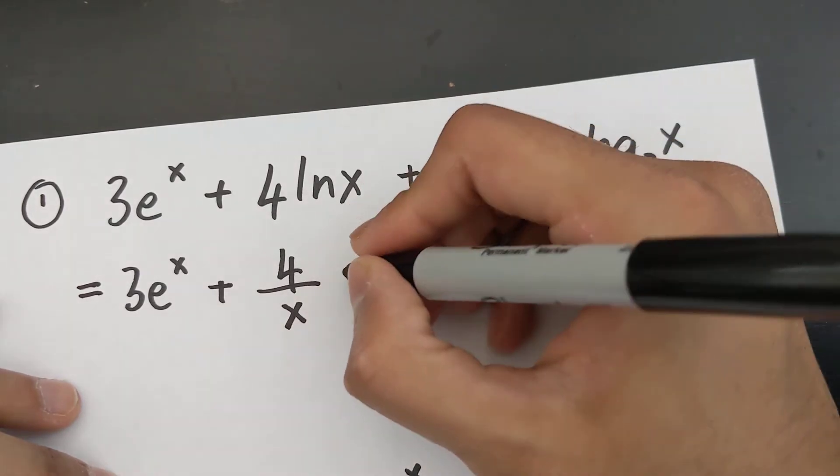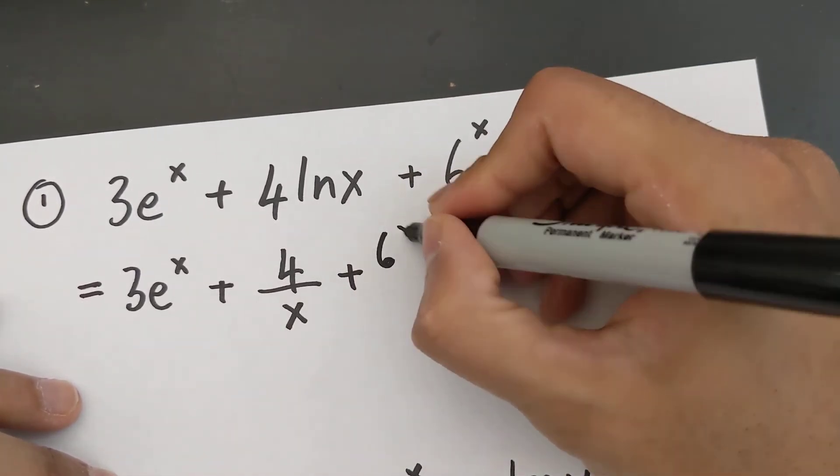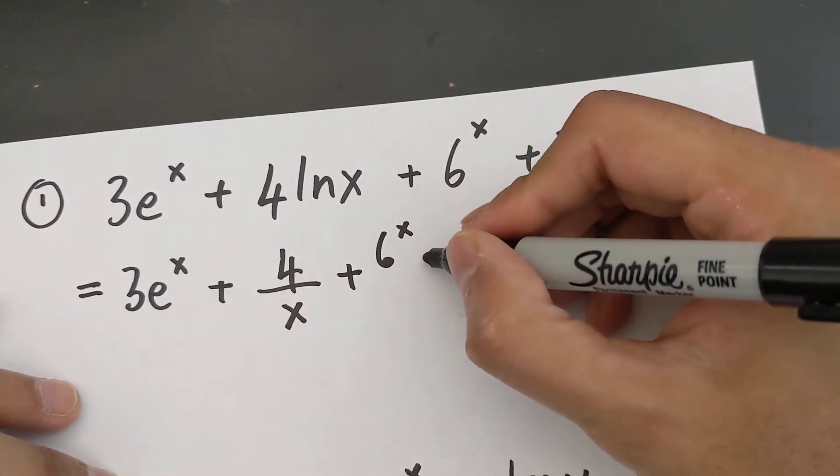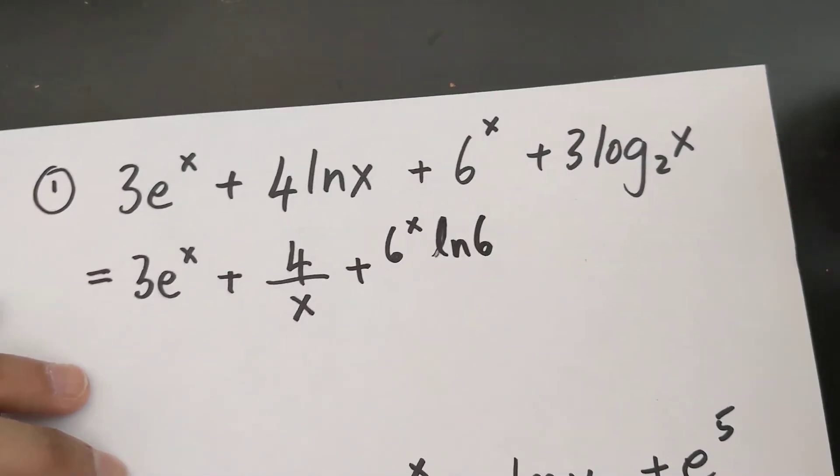For deriving 6 to the power of x, you start by writing the exact same thing, 6 to the power of x, but then you multiply that by ln of the base. So 6 to the power of x times ln 6.